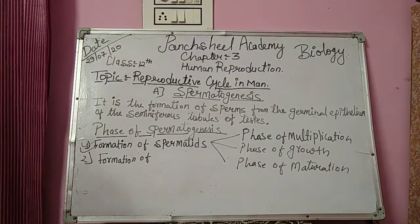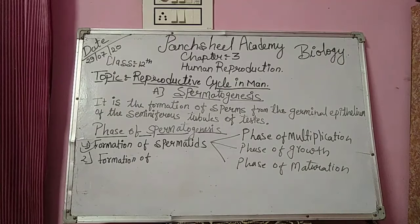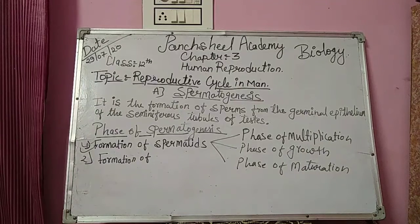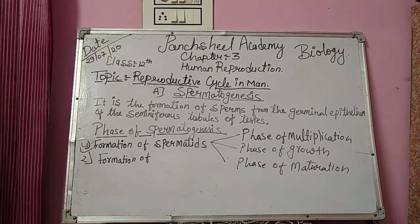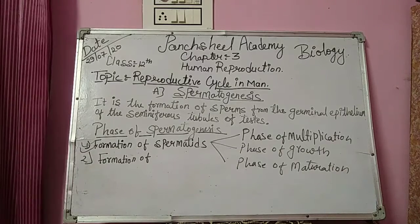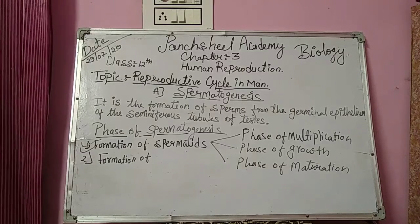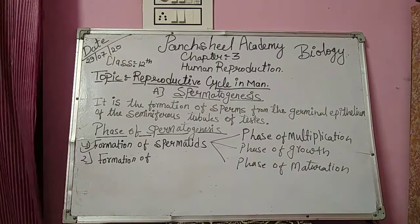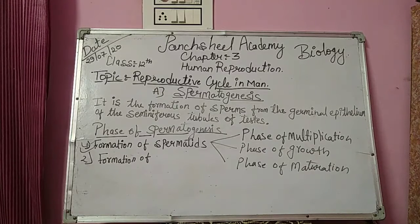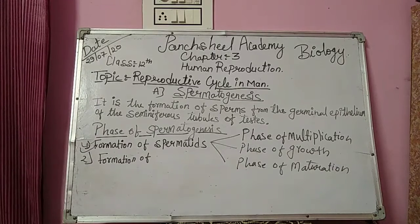In the phase of growth, the spermatocytes and their nuclei enlarge in size. The third phase is the phase of maturation. Each primary spermatocyte undergoes a first maturation division, which is a reduction division, and two daughter cells are formed, each with the haploid number of chromosomes. These daughter cells are called secondary spermatocytes. Secondary spermatocytes undergo a second maturation division, which is a simple mitotic division. This way, four daughter cells are formed, known as spermatids. Thus, from each primary spermatocyte, four spermatids are formed.